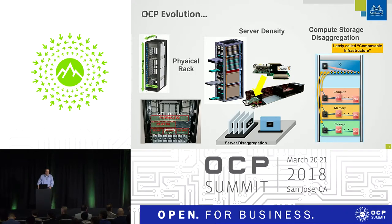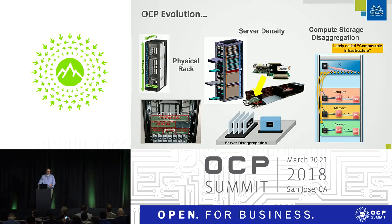This disaggregation is now evolving into compute-storage disaggregation, sometimes called composable infrastructure. Here we're not only disaggregating the network from the CPU but also the storage. This enables the data center to dynamically allocate the amount of storage and compute needed for an application.